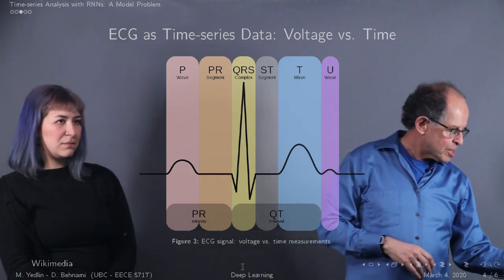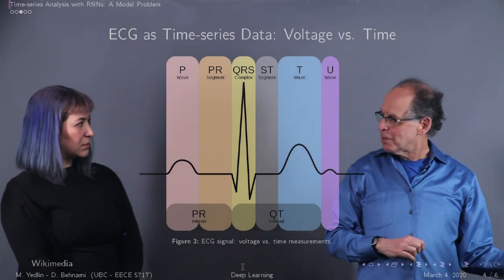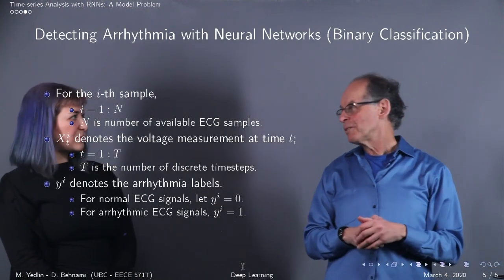All right, so let's see how we can proceed to use RNN in two different scenarios. Here's the first scenario: binary classification.